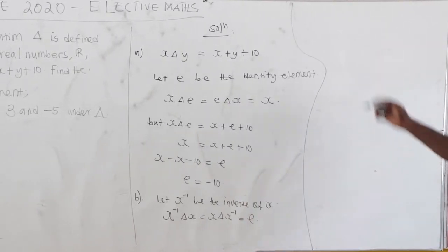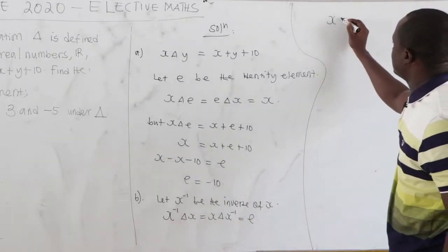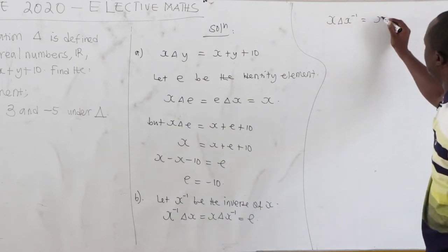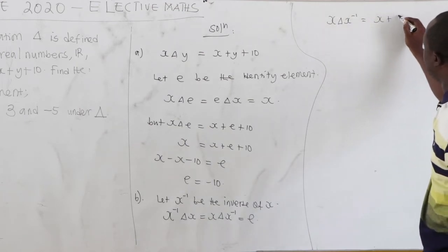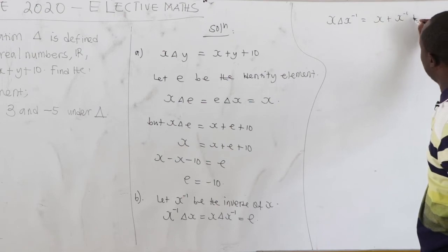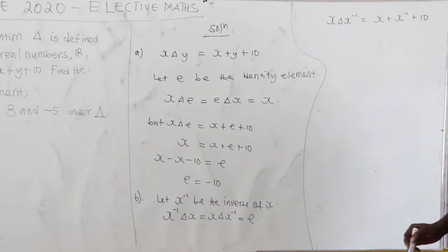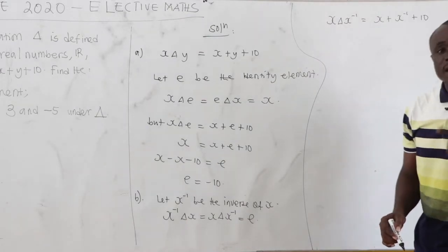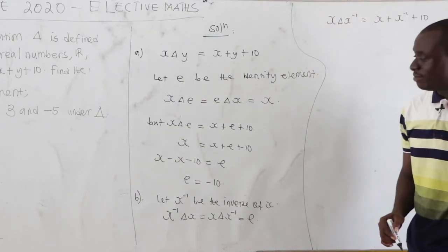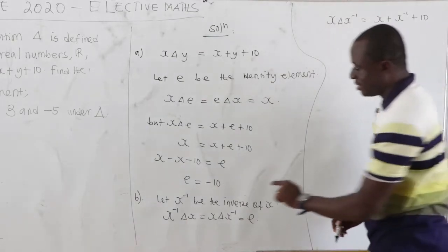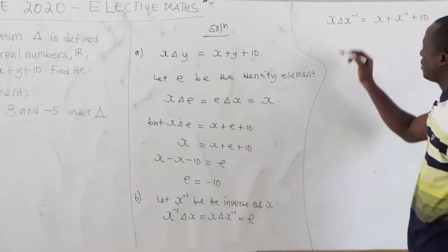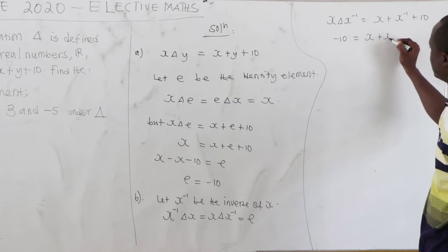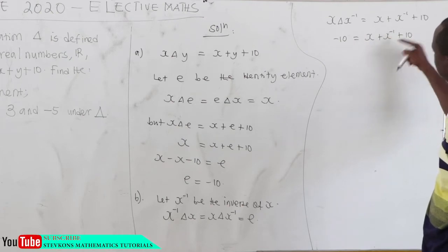The identity element is negative 10. Hence, x delta x-inverse equals x plus x-inverse plus 10. But x delta x-inverse should equal the identity element, which is negative 10. So we have negative 10 equal to x plus x-inverse plus 10.